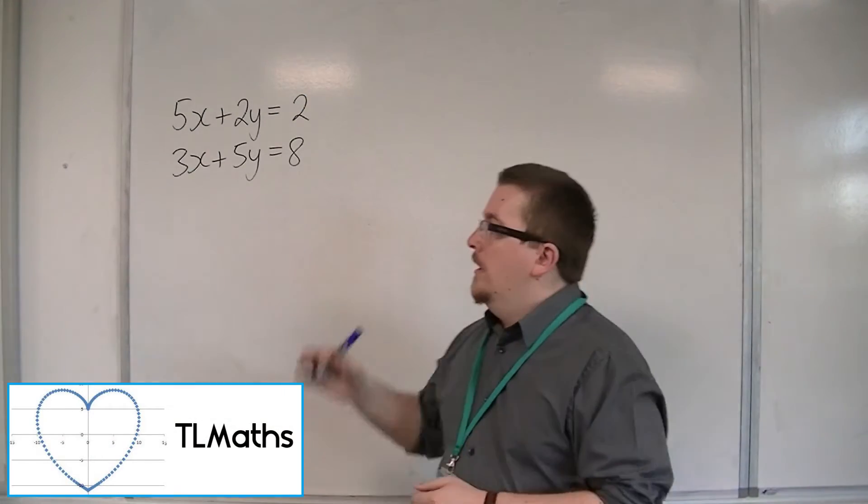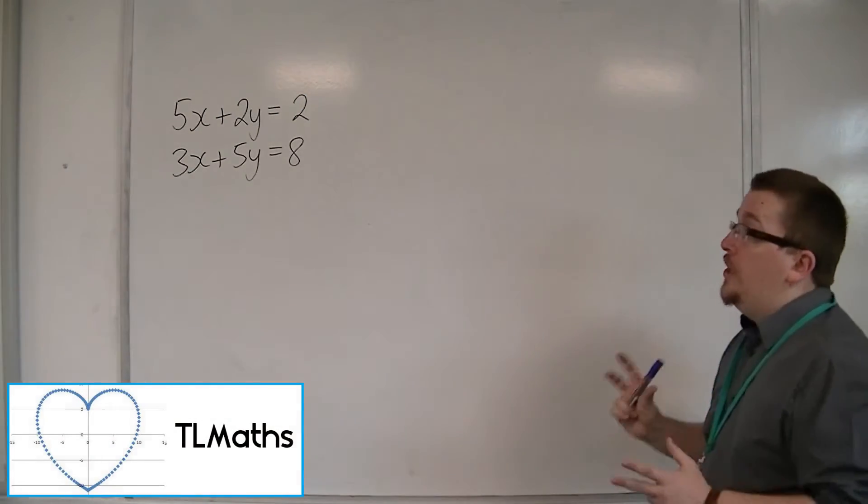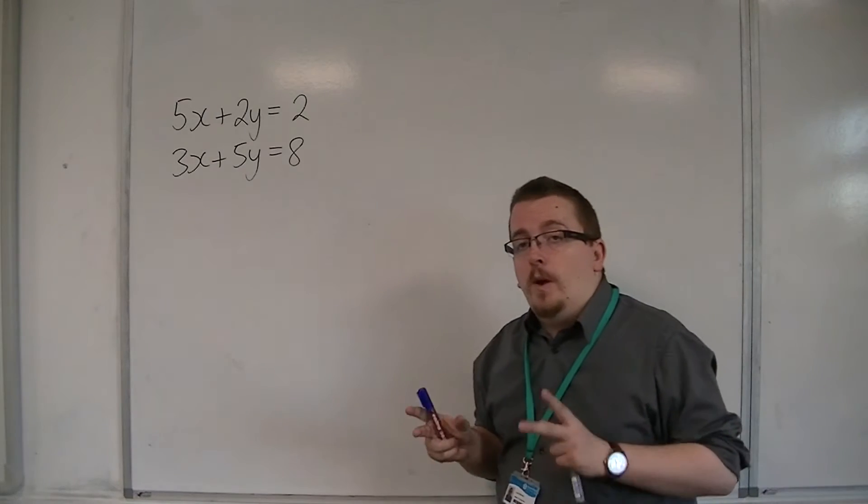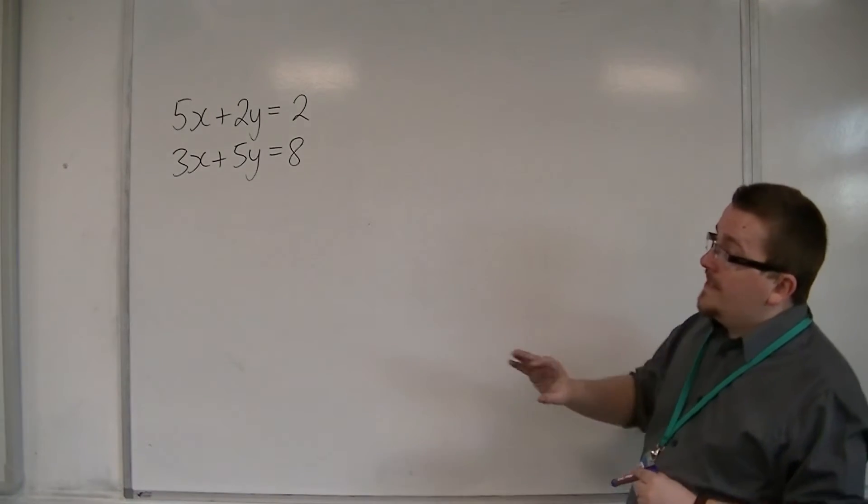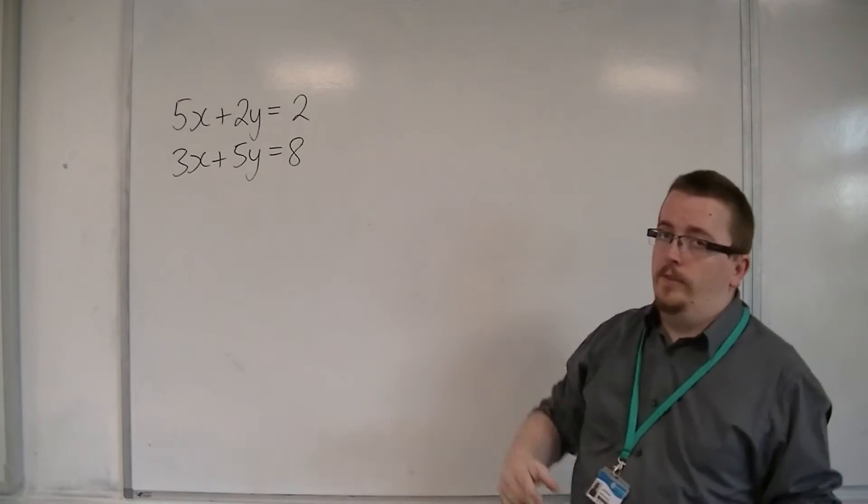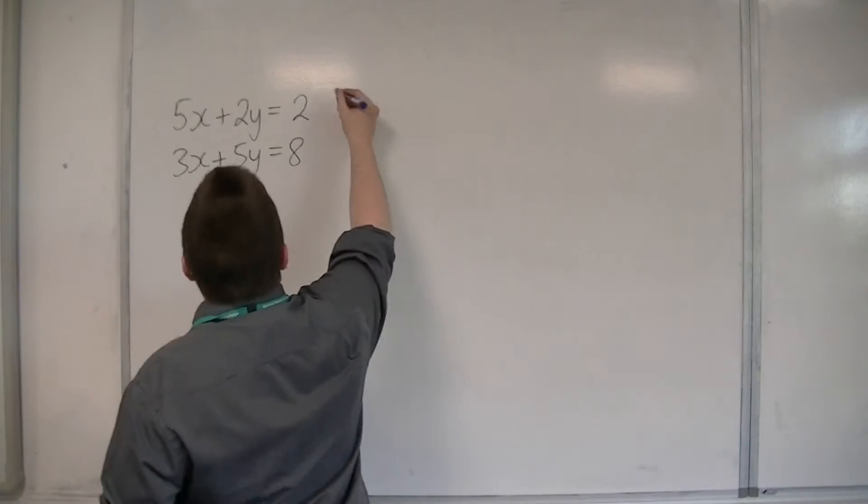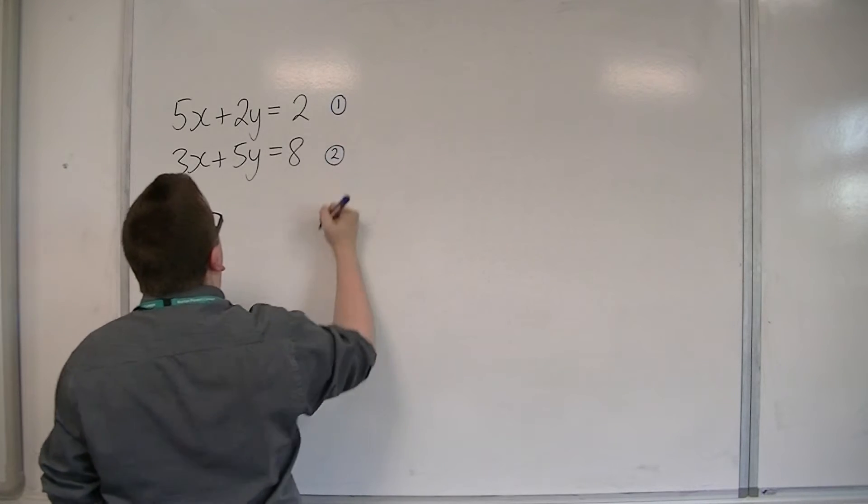In this final example, this is probably the most traditional of simultaneous equations that you can find. We're wanting to find the intersection of these two lines. So, we're going to number this equation number 1 and this equation number 2.